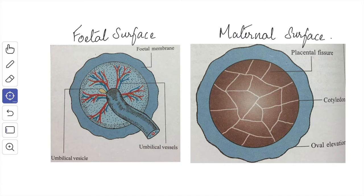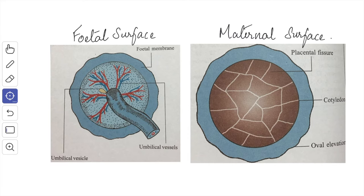At full term, the placenta presents the following measurements: diameter of about 15 to 20 centimeters, thickness of 3 centimeters at the center, and it weighs about 500 grams. The proportional weight between the placenta and fetus varies: in the first month it is 6:1, in the fourth month it is 1:1, and at birth it is 1:7. A full-term placenta occupies about 30 percent of the uterine wall.